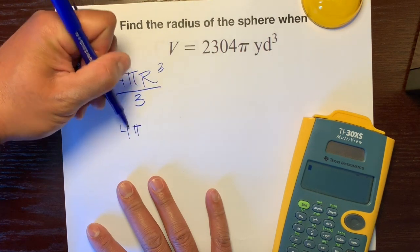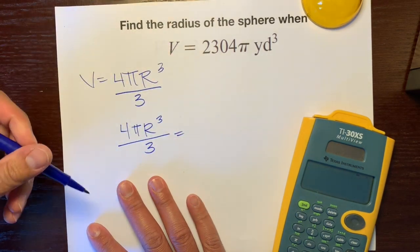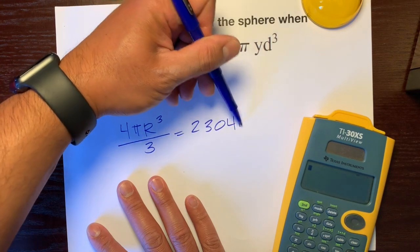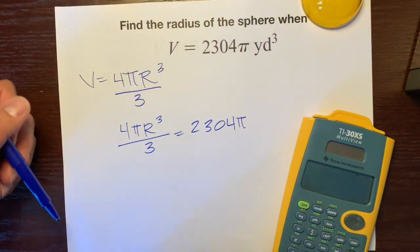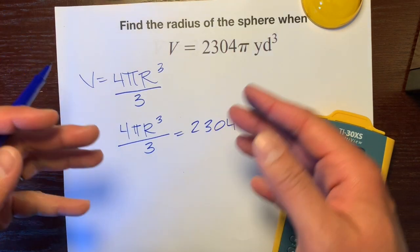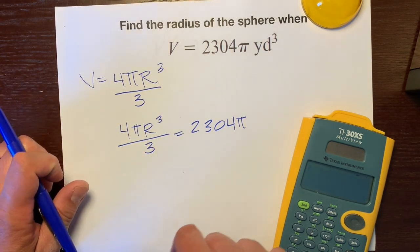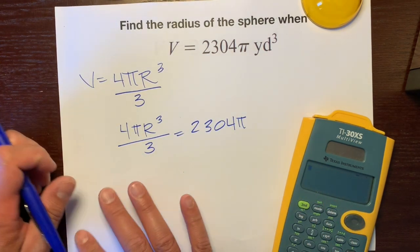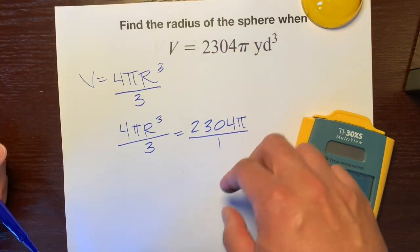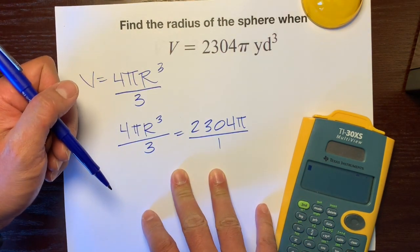So 4πr³ divided by 3 equals 2,304π. There's a couple different ways algebraically we could do this. I like to have a fraction on both sides, so I'll divide this by one, the invisible one over there. Now we have two fractions, so we'll just cross multiply.